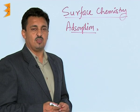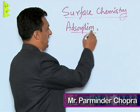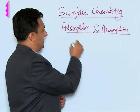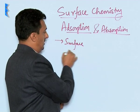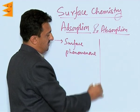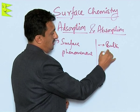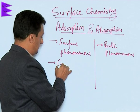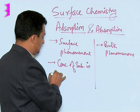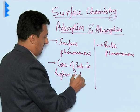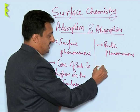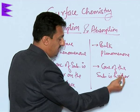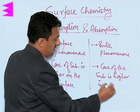Let us see the basic difference between adsorption and absorption. Adsorption is a surface phenomenon whereas absorption is a bulk phenomenon. In adsorption, the concentration of the substance is higher on the surface, whereas in absorption, the concentration of the substance is higher in the bulk.